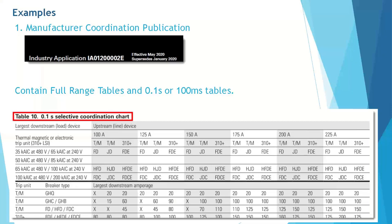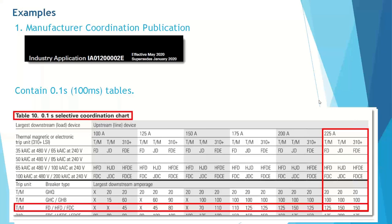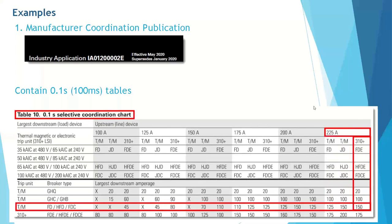Most people out there have been doing coordination for a long time know that the instantaneous bands often overlap. With the recent testing that all of these manufacturers have done to update their tables, they will say that even though you may appear to see an instantaneous overlap, the tested combinations are valid up to the current values specified in those tables. So for this example, we will be using Eaton's publication. I wanted to point out that there are two sets of tables in the publications typically. There are both full range and 100 millisecond tables.